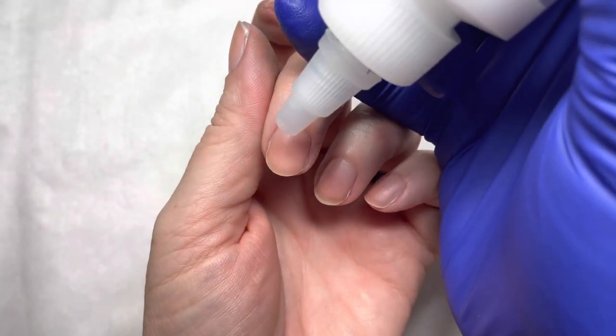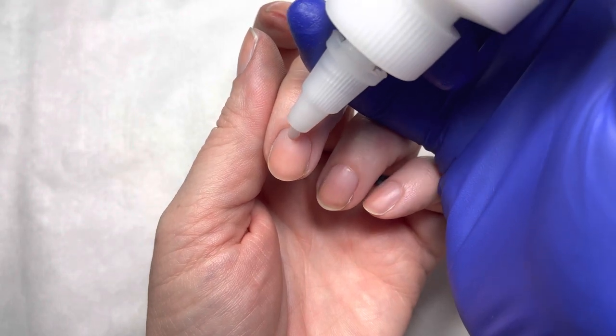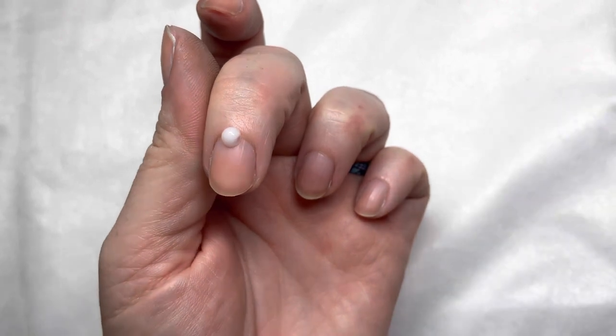Just want to put a small amount of the cuticle remover on each nail. To keep the video short, we're just going to use on one nail.